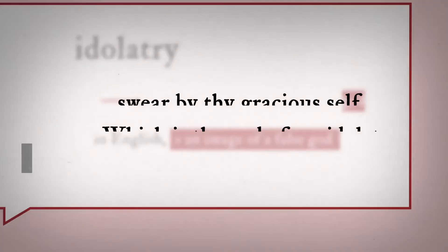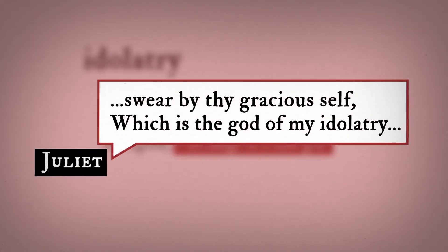In this line, when Juliet ironically refers to Romeo as the god of her idolatry, it's the first instance of anyone using idol or idolatry in a positive sense.